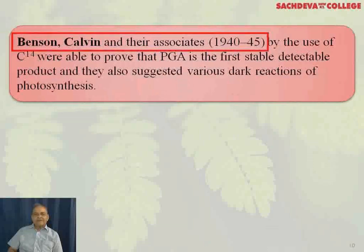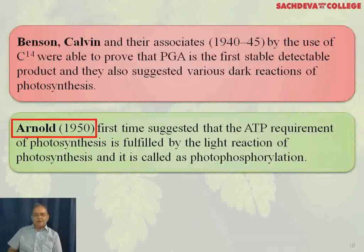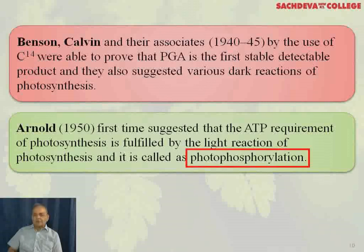Benson, Calvin, and their associates, in 1945, by the use of C-14, were able to prove that PGA is the first stable detectable product, and they also suggested various dark reactions of photosynthesis. Arnold, in 1950, first suggested that the ATP requirement of photosynthesis is fulfilled by the light reaction, and he gave the term photophosphorylation.